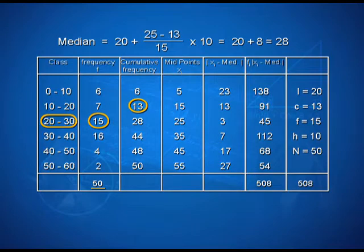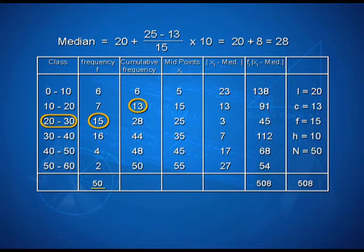Now we shall prepare a table having the following columns: first, representing the classes; second, representing the frequency; third, showing the cumulative frequencies; fourth, showing the midpoints x_i; fifth, showing the absolute value of x_i minus median; and next is the product of f_i into |x_i minus median|. Cumulative frequencies can be calculated as first 6, then 6 plus 7 gives us 13, 13 plus 15 is 28, 28 plus 16 is 44, and so on.